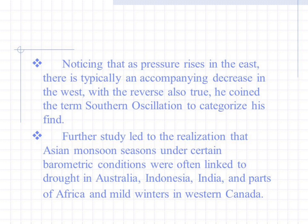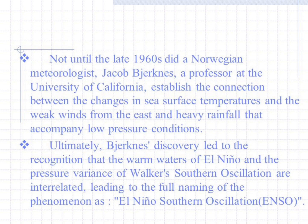The term 'Southern Oscillation' was coined to categorize this find. Further study led to the realization that Asian monsoon seasons under certain barometric conditions were often linked to drought in Australia, Indonesia, India, and parts of Africa, and mild winters in western Canada. Not until the late 1960s did Norwegian meteorologist Jacob Bjerknes, a professor at the University of California, establish the connection between changes in sea surface temperatures and the weak winds from the east and heavy rainfall accompanying low pressure conditions.